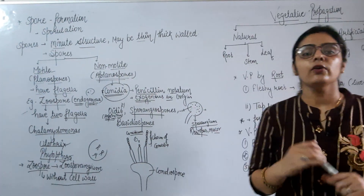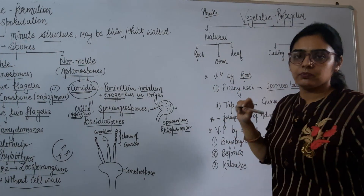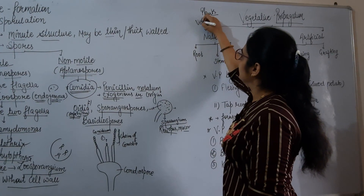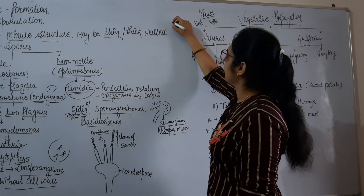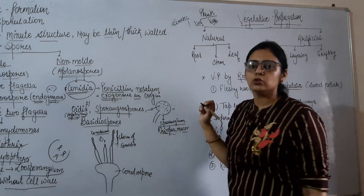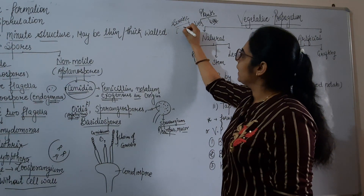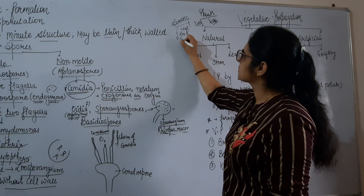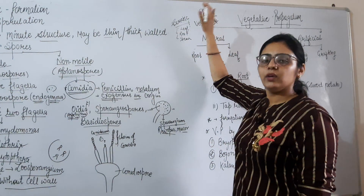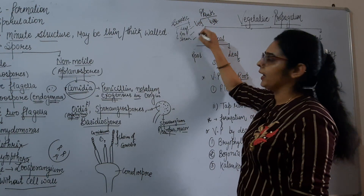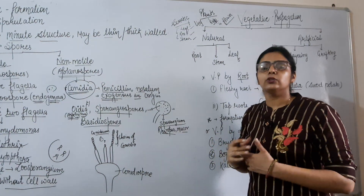Now the next topic: vegetative propagation. Before we discuss it, note that plants have two parts. One is the vegetative part, also known as the somatic part, and the second is the reproductive part. The vegetative or somatic part includes leaf, root, and stem.